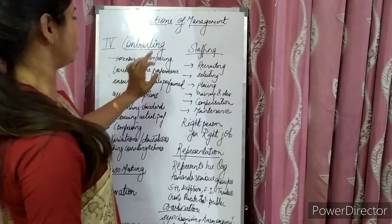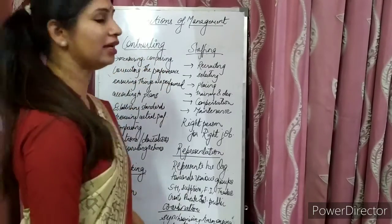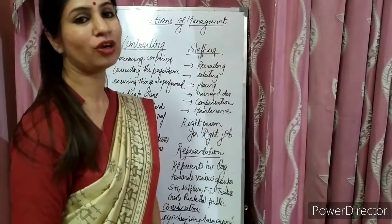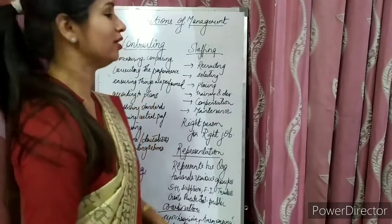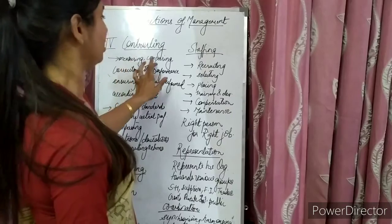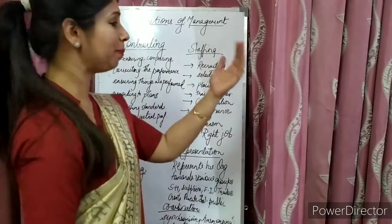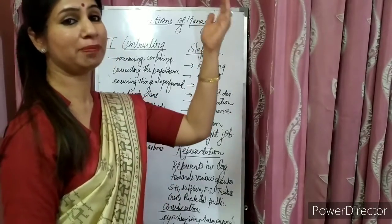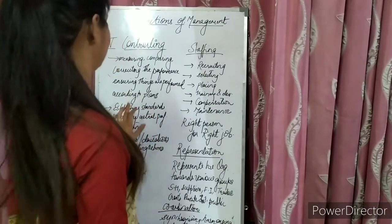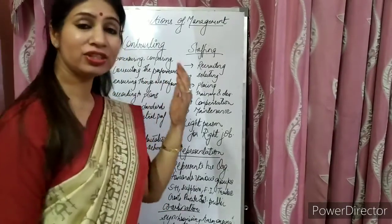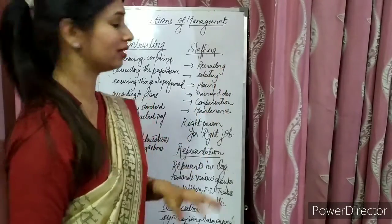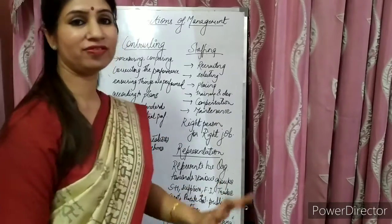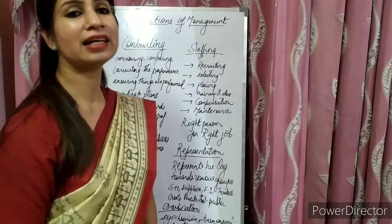The next function of management is controlling. Controlling is measuring, comparing, and correcting performance, ensuring that things are performed according to the set plans, standards, and objectives established earlier. The main steps in controlling begin with establishing standards — various standards are set so employees know how much work they have to do.